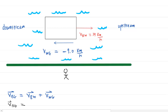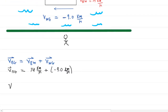The velocity of the boat with respect to the water was given as positive 14 kilometers per hour. We add that to the velocity of the water with respect to the ground, which is negative 9 kilometers per hour. When we add these two together, we get the answer that intuition also gave us: 5 kilometers per hour as the velocity of the boat with respect to the ground, as measured by an observer on the ground.